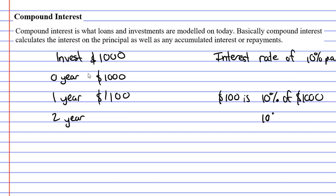This time, rather than finding 10% of $1,000, you're going to find 10% of $1,100, because that is your new amount that is in your bank account. This will be $110.